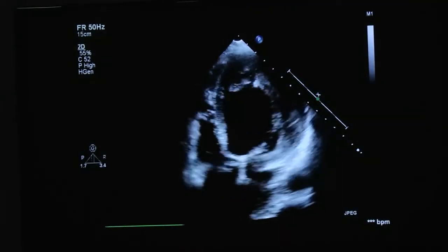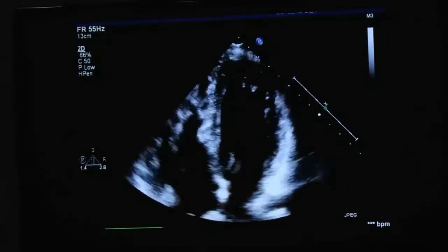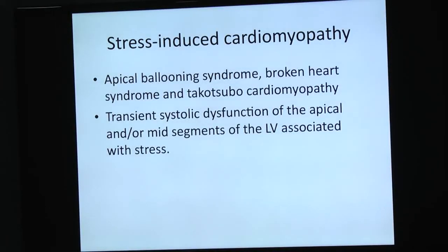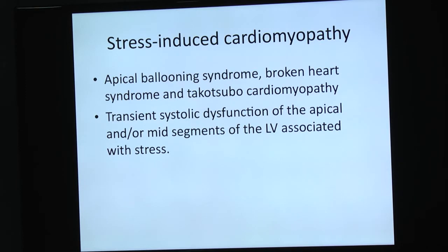The transthoracic apical four-chamber view shows non-compaction clearly. Stress-induced cardiomyopathy — Takotsubo — a lot of patients get this around Valentine's Day or when they lose a loved one. A 70-year-old lady, one month back, lost her husband and came in fine for a pre-anesthetic assessment. ECG was terribly abnormal, cardiologist found stress-induced cardiomyopathy with apical ballooning and transient systolic dysfunction. The basal segments are moving but the apical segment is ballooned out — it tends to recover.